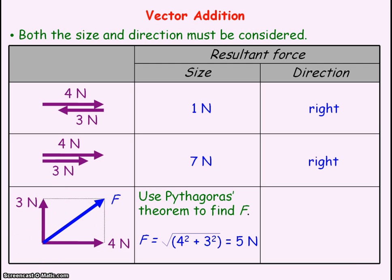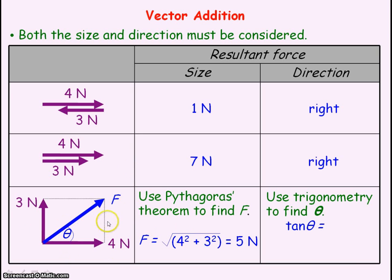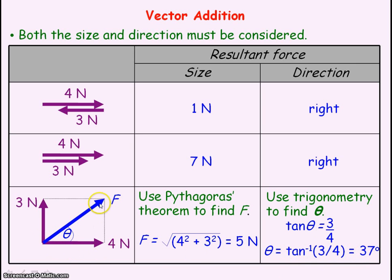The direction will be an angle, which we are measuring from the horizontal. We use the tan term because tan of theta equals the opposite, which is the 3N, divided by the adjacent to the angle, which is 4N. So theta equals the inverse tan of 3 divided by 4, which is 37 degrees. The resultant force is 5N at an angle of 37 degrees from the horizontal.